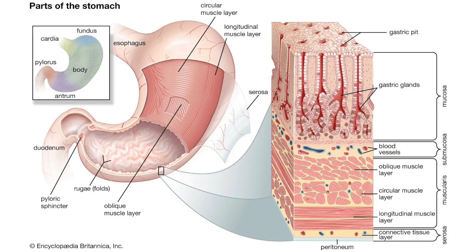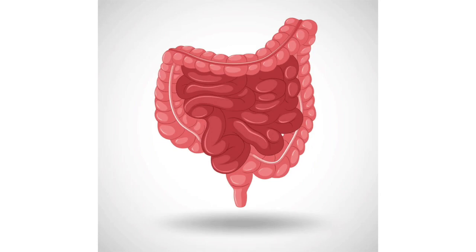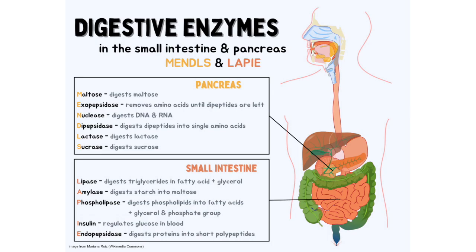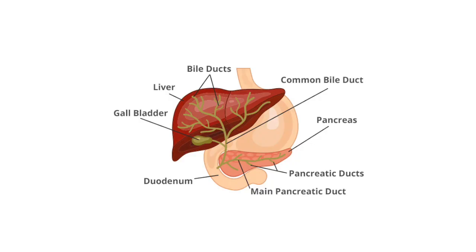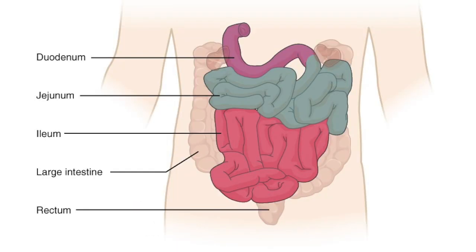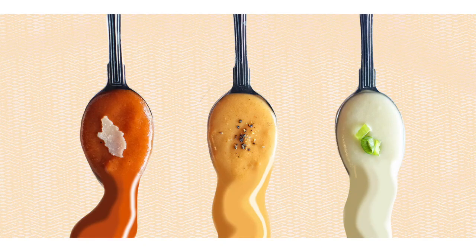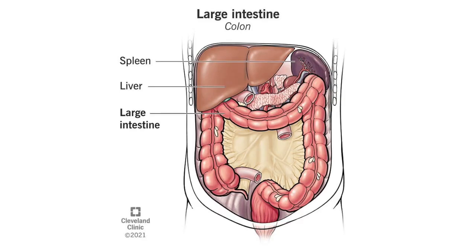Once the food is processed sufficiently, it moves to the small intestine. The small intestine is a long tube that breaks down proteins, carbohydrates, and fats using enzymes from the pancreas and bile from the liver. The first segment of the small intestine, the duodenum, is responsible for the breakdown. The jejunum and ileum, which are the lower two parts, are responsible for absorbing nutrients into our bloodstream. It is important to note that food is liquid after passing the small intestine, and after all the nutrients are absorbed, the remaining liquid moves to the large intestine.